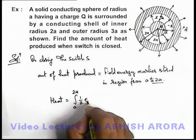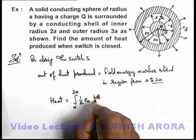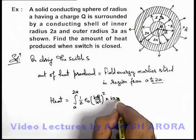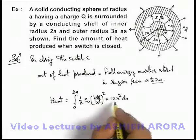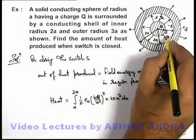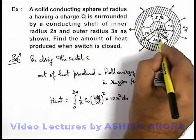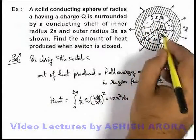It is half epsilon not E squared. The electric field can be simply written as kQ by x squared, whole squared, multiplied by 4 pi x squared dx, which is the energy stored within the elemental shell of radius dx at a distance x from center.